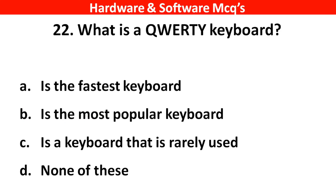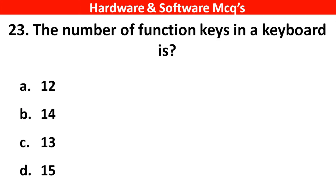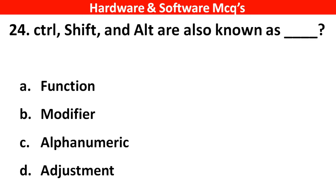Next question: What is a QWERTY keyboard? The right answer is option B — it is the most popular keyboard. Next question: The number of function keys in a keyboard is — the right answer is option A — 12. Next question: Control, Shift and Alt are also known as ___. The right answer is option B — modifier keys.